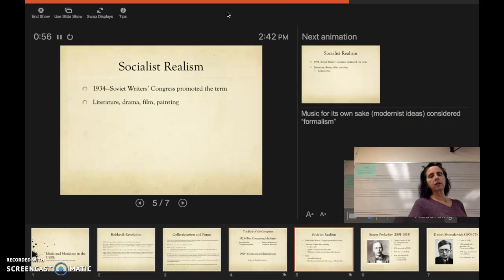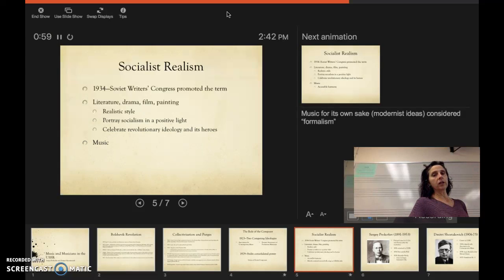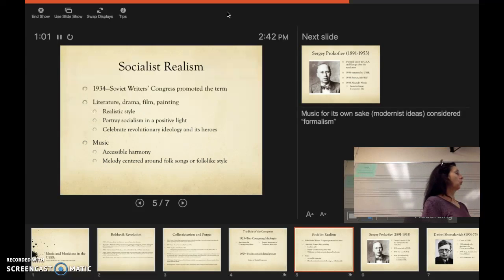What that Union of Soviet Composers wanted is that you needed to support these ideas of socialist realism. So art, literature, drama, film, painting should be realistic in style and portray socialism in a positive light and celebrate revolutionary ideology and its heroes - lifting up those important people connected with whatever makes Russia great.